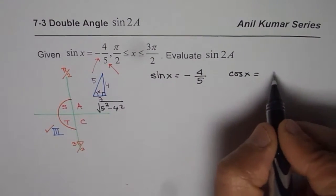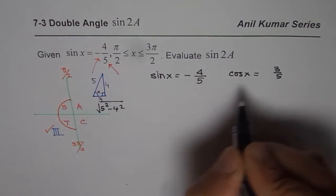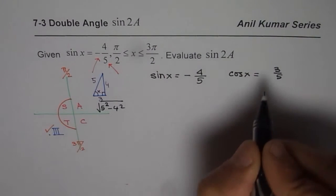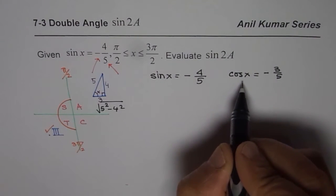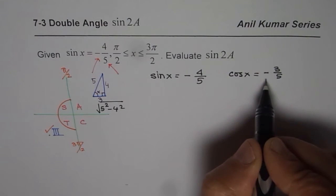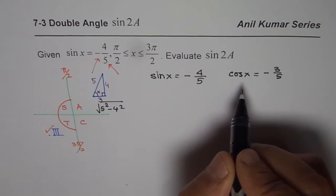From this triangle, cosine of x is adjacent over hypotenuse, 3 over 5. Since the angle is in quadrant 3, cosine is negative here, so we will put negative. As I said, look into these trigonometric ratios as some value with sign, then it will be very easy for you to solve any equation based on these trigonometric ratios.